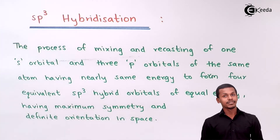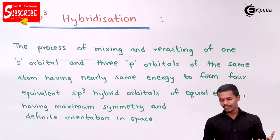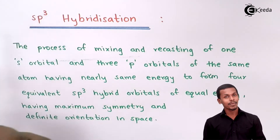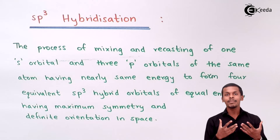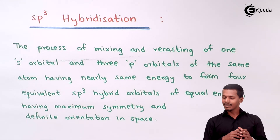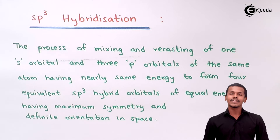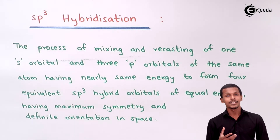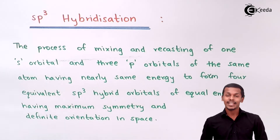So now we are going to talk about sp3 hybridization. It basically involves one s orbital of the same atom and three p orbitals of the same atom. They mix with each other to form the same number of orbitals, known as hybrid orbitals. This process is known as sp3 hybridization. Let us understand its definition and then go through an example.